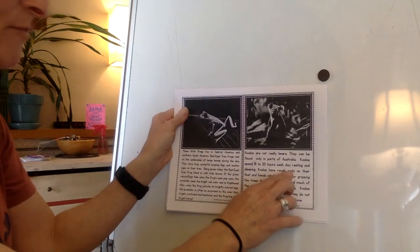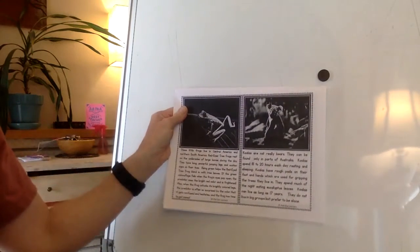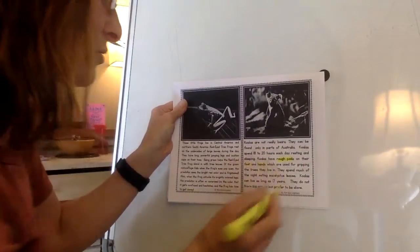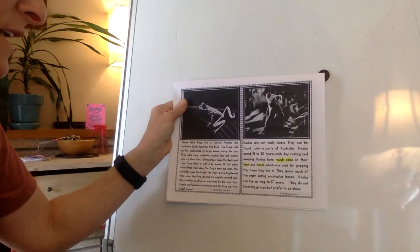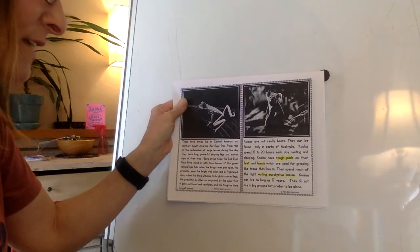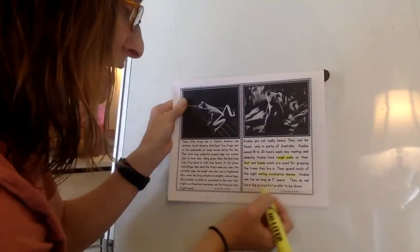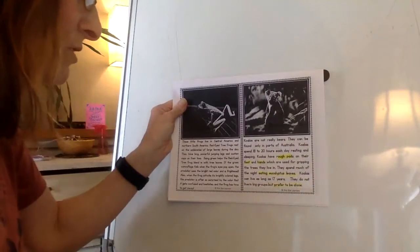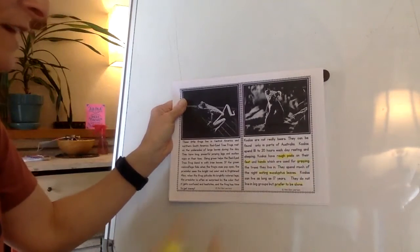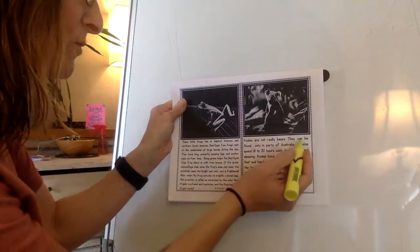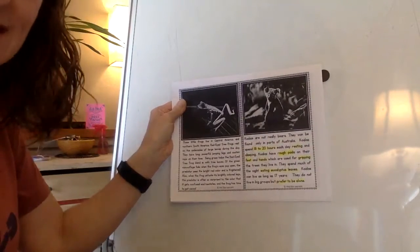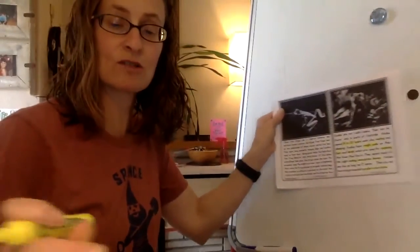Koalas have rough pads — that sounds like a description — so I'm going to highlight 'rough pads on their feet and hands, which are used for gripping the trees they live in.' They spend much of the night eating eucalyptus leaves. Koalas can live as long as 17 years. They prefer to live alone. I'm highlighting just those keywords that help with description — like 'gripping the trees' and '18 to 20 hours resting and sleeping' — not every single word.